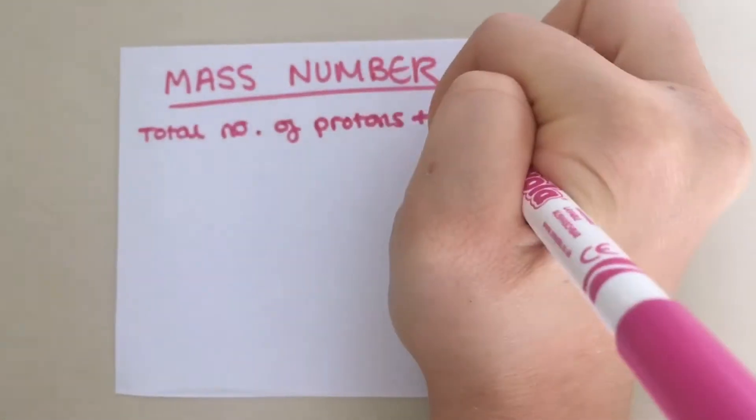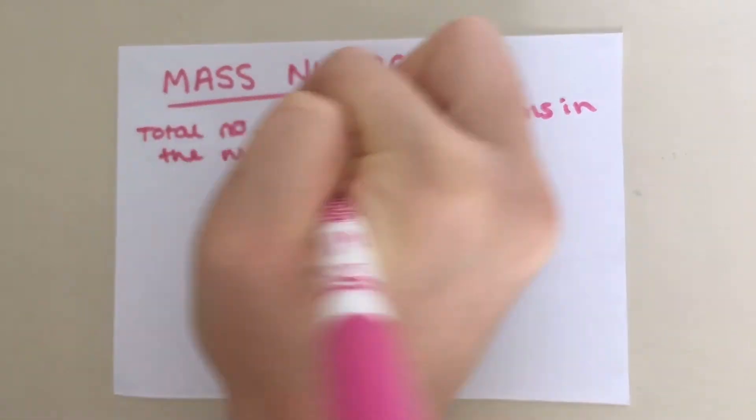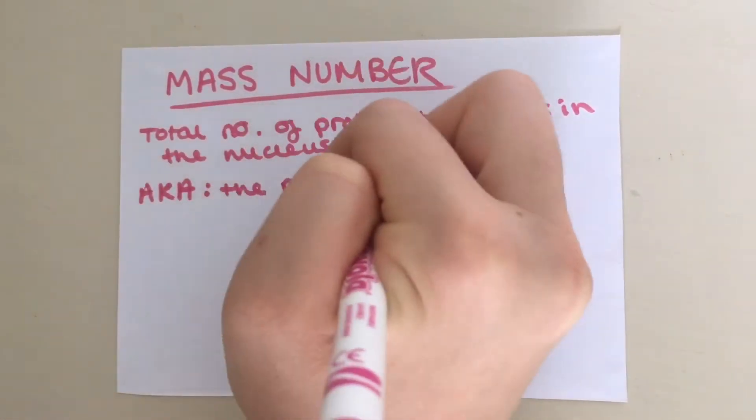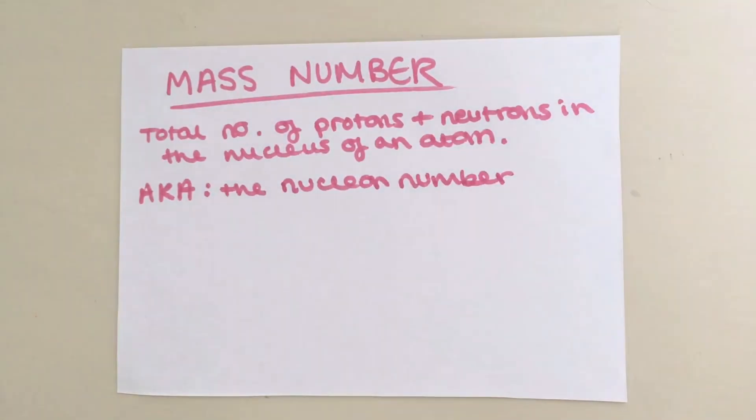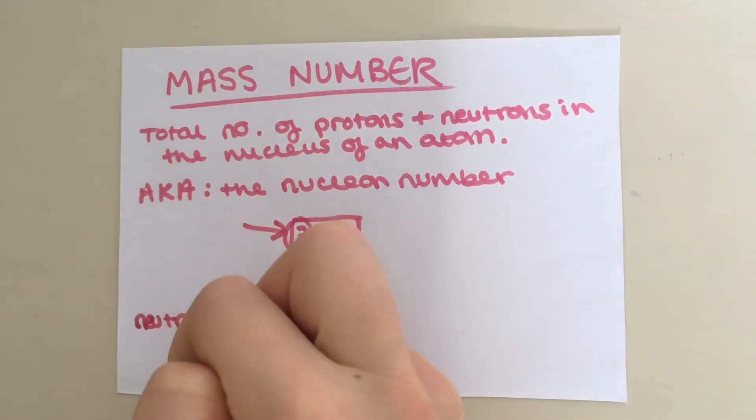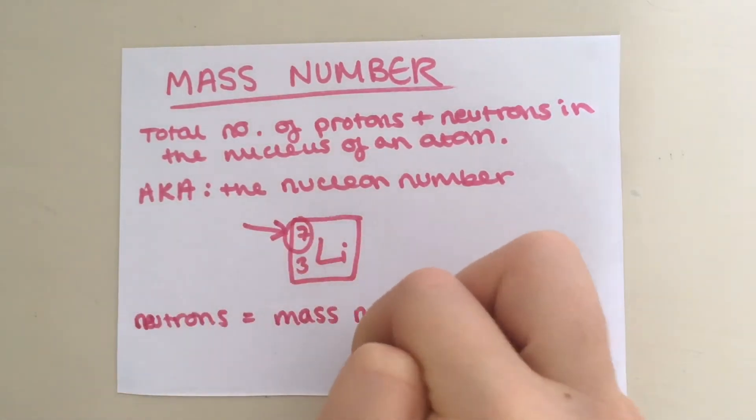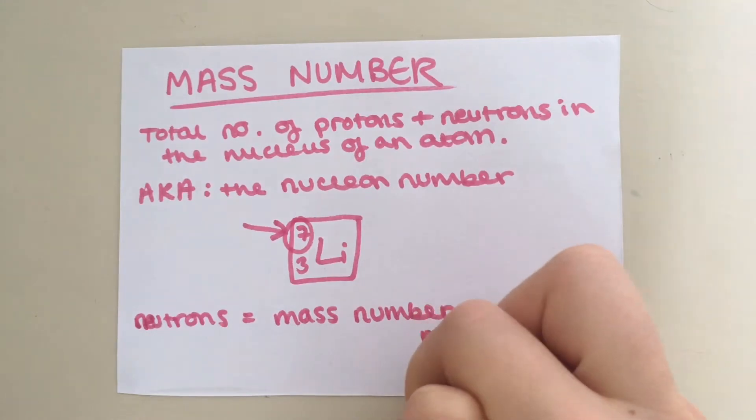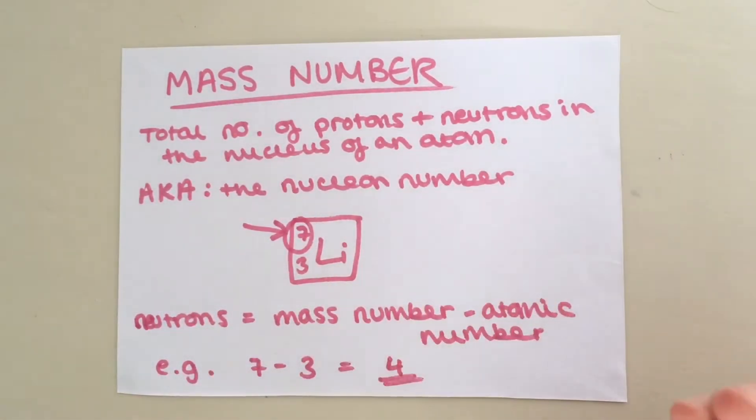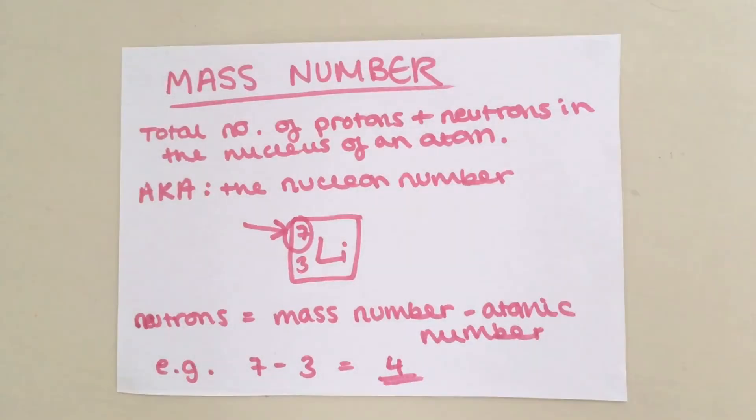Mass number is the total number of protons and neutrons in the nucleus of an atom. You may also see it referred to as the nucleon number. This is because protons and neutrons are sometimes called nucleons. On the periodic table, the mass number is the top number. To calculate the number of neutrons in an atom, you do mass number minus atomic number. So in this case, you would do 7 minus 3 which equals 4, so there are 4 neutrons in a lithium nucleus.